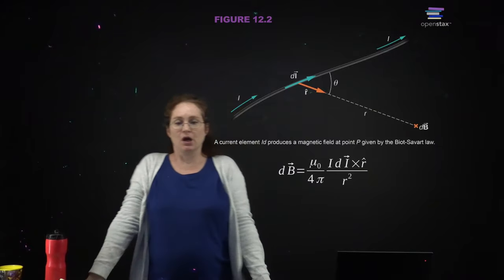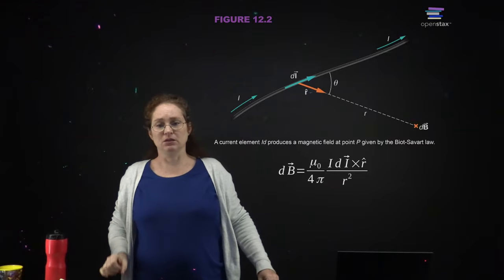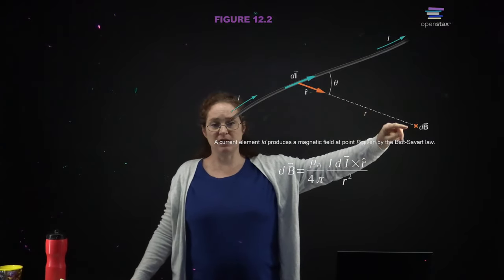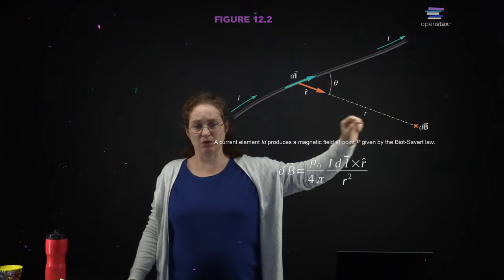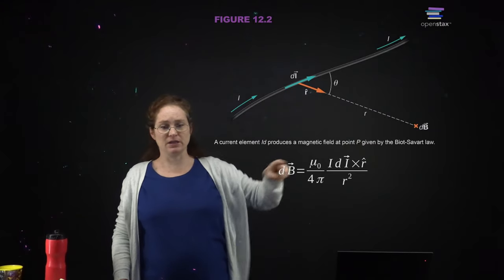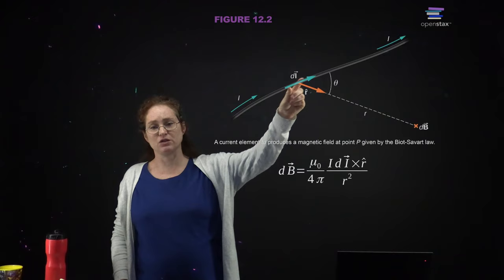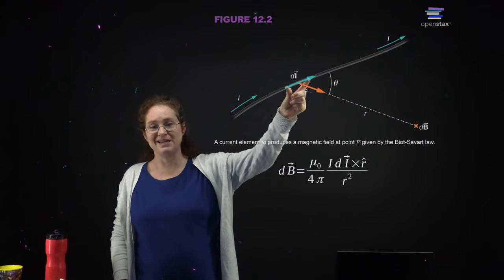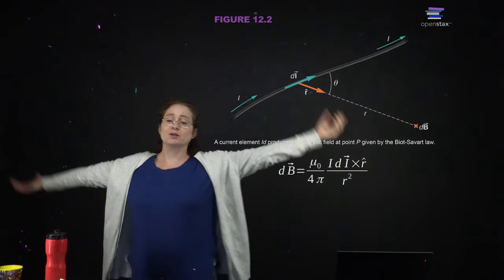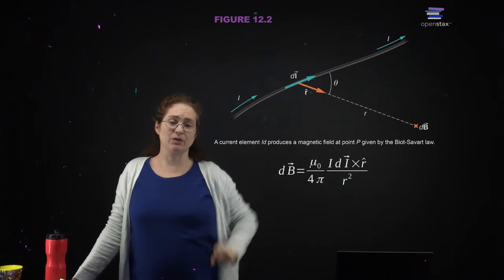So here we have a current element DL that produces a magnetic field at some point P away from that wire. This is the magnetic field created by that small segment of wire of length DL. We use the D because that indicates that eventually we are going to integrate over the entire wire — so this is a tiny segment of the wire.